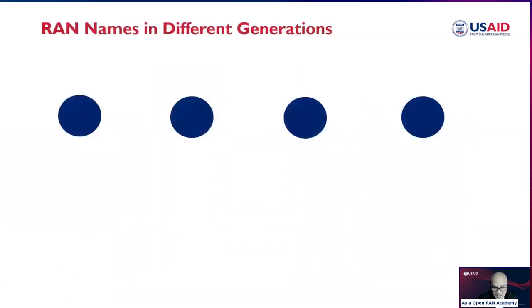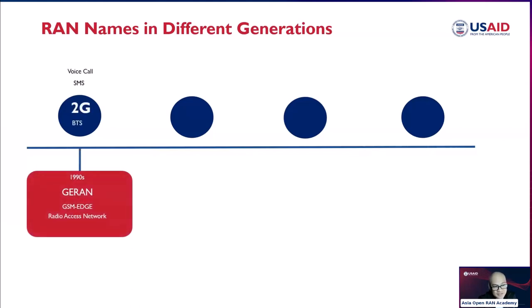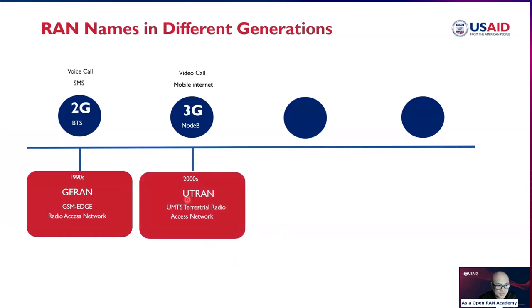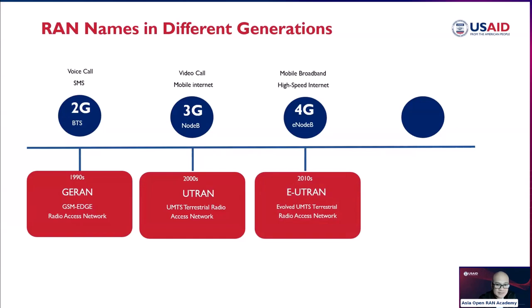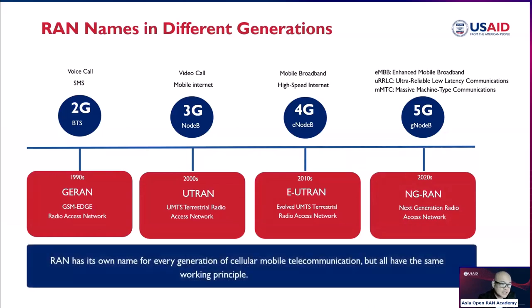Radio access networks also have different generation names. Have you heard of GERAN, UTRAN, E-UTRAN, and NGRAN? These are the different names for the RAN used in different generations. For GSM, it's GERAN — the GSM EDGE Radio Access Network. For 3G, it's UTRAN — the UMTS Terrestrial Radio Access Network. For LTE, it's E-UTRAN — the Evolved Universal Terrestrial Radio Access Network. For 5G, it's NGRAN — Next Generation RAN. Each generation has its own name but the same working principle.